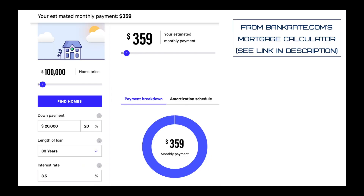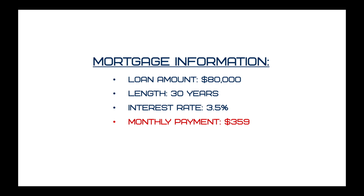To check the math, I went to Bankrate.com's mortgage calculator and sure enough, when I entered a home price of $100,000 with a down payment of $20,000, a loan length of 30 years, and an interest rate of 3.5%, I got the same monthly payment of $359 per month. If you want to find this mortgage calculator yourself, check the link in the description. So as a brief overview: loan amount is $80,000, length is 30 years, interest rate is 3.5%, and monthly payment is $359.